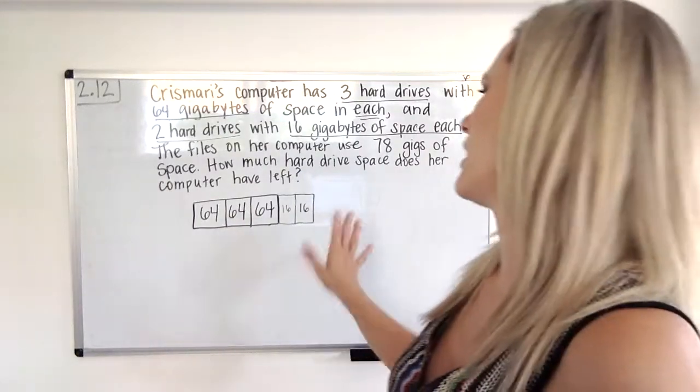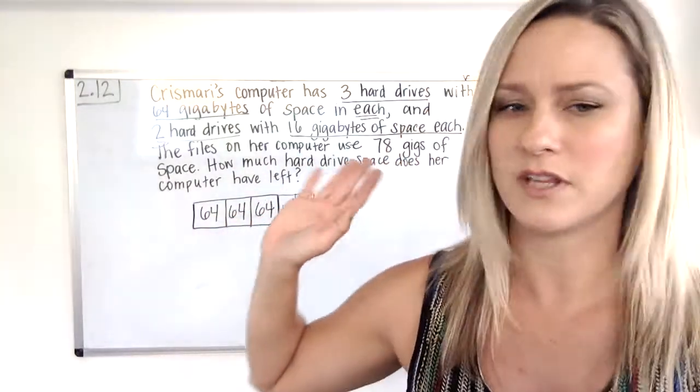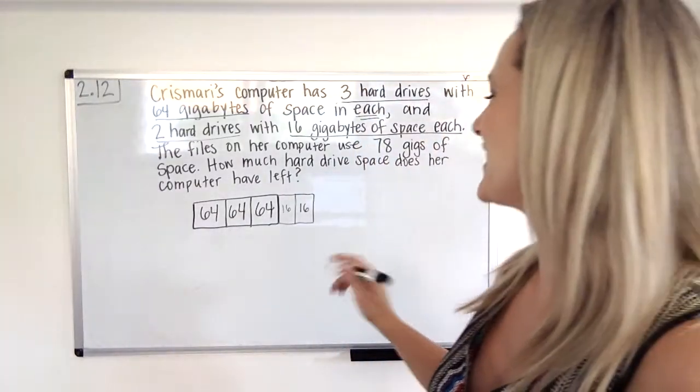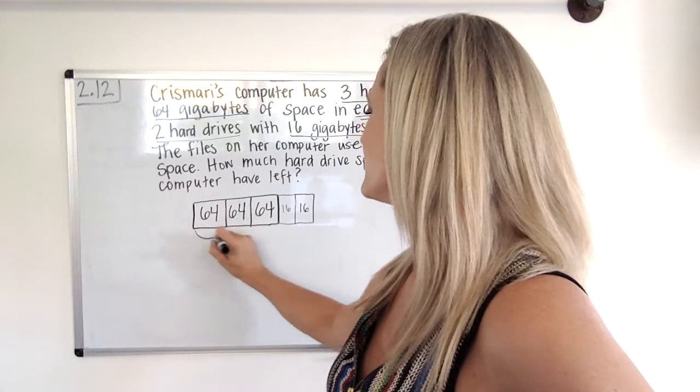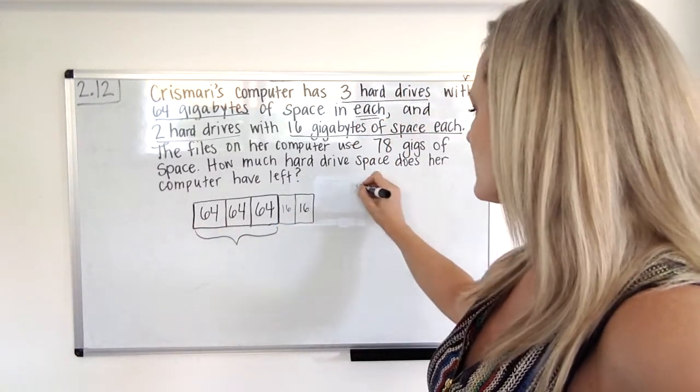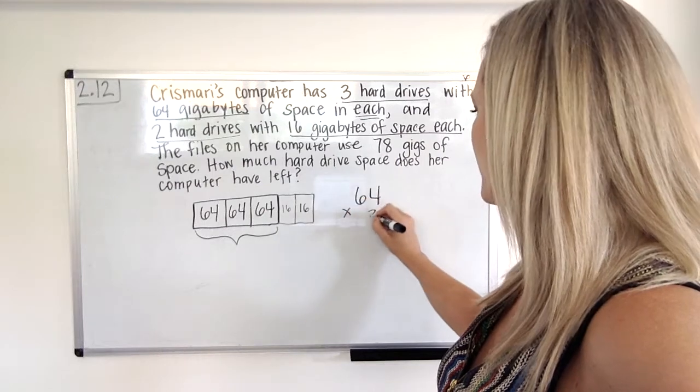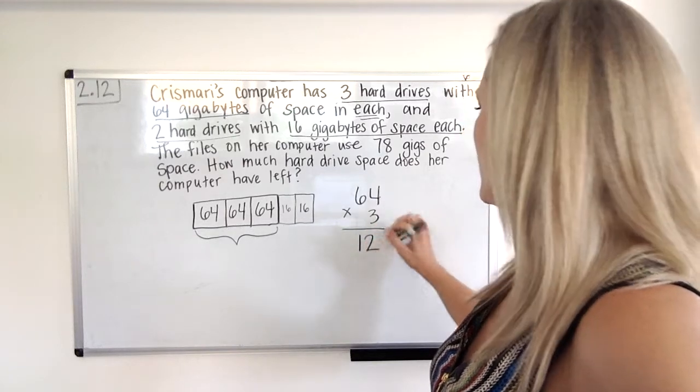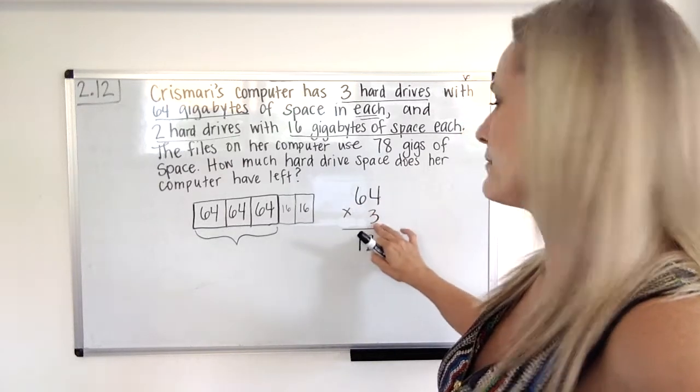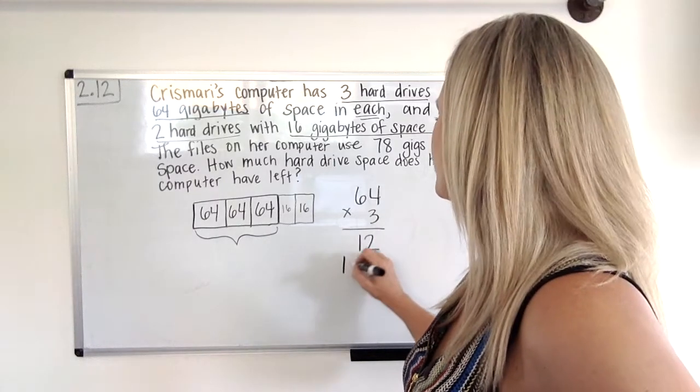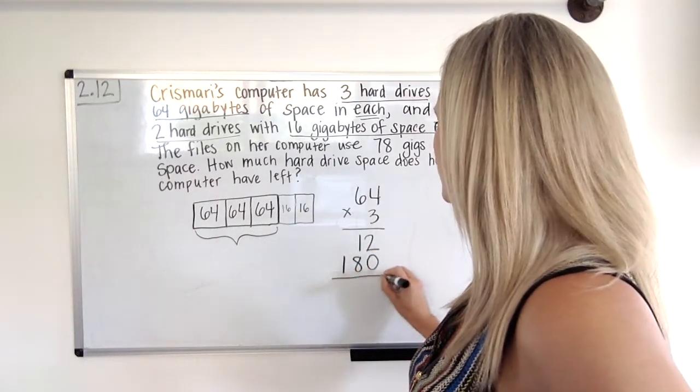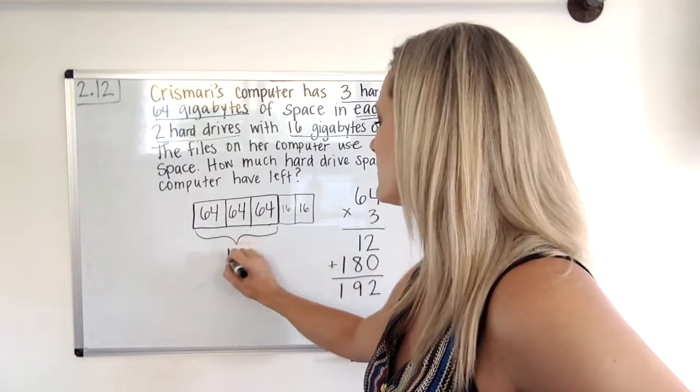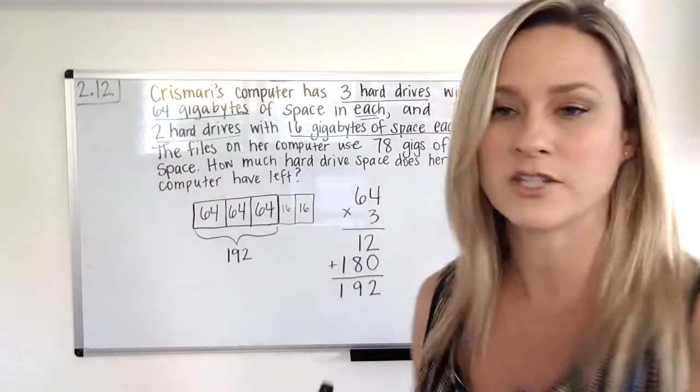All right, I think I actually want to figure out what I have going on here before I even do the other part, because then I'm just going to feel like my brain is exploding. So let's figure it out. So 64, three times would be, let's check it out. 64 times 3. Four times three is 12. And 60 times three is 180. And I'm just going to add those together. So this piece right here is 192.